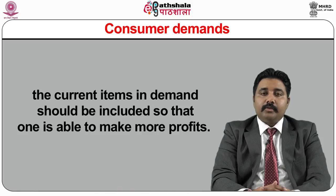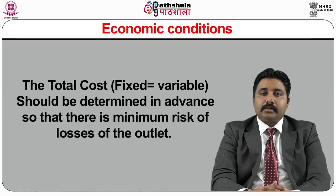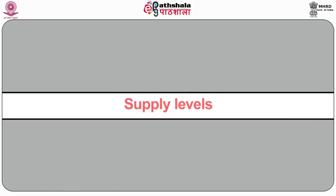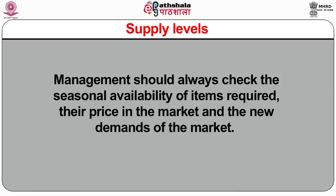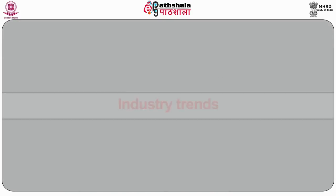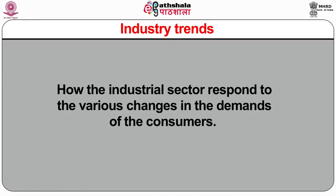Factors affecting menu planning include external factors: consumer demands — current items in demand should be included to make more profits; economic conditions — total costs, both fixed and variable, should be determined in advance to minimize risk of losses; competition — one should clearly know competitors' prices and quotations to attract customers and increase self-profits; supply levels — management should check seasonal availability and market prices of required items; and industry trends — how the industrial sector responds to changes in consumer demands.